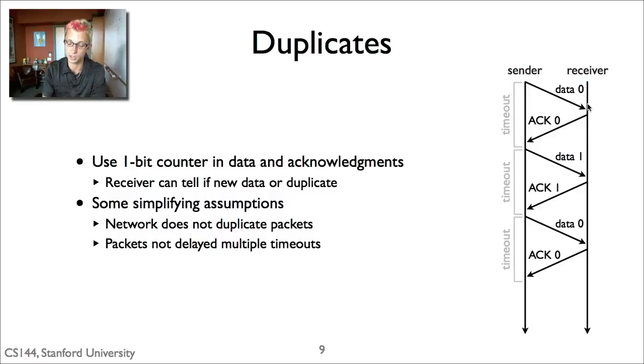And so the idea is to use this one-bit counter on all data and acknowledgement packets. So a sender sends data zero, then it receives ACK zero. Data one, ACK one, data zero, ACK zero. And so now the receiver can tell if this is new data or a duplicate. And so that prior case I showed, it would be able to distinguish between the acknowledgement for the retransmission of packet zero and an acknowledgement for the first transmission of packet one.